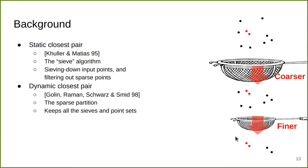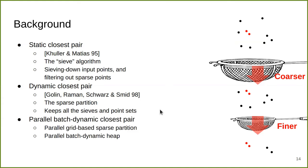For the dynamic closest pair by Gaolin, Rama, Schroetz, and Schmidt, they use a data structure called sparse partition. The fundamental idea is similar to the sieve idea — they keep all the sieves and all the levels. For a dynamic insertion, they throw in a point from the top, and while it trickles down, it also moves points around between these levels. For our parallel batch dynamic closest pair, we base our parallel version on the sequential dynamic closest pair. We also use the sparse partition data structure, specifically the parallel grid-based sparse partition. We also design our own parallel batch dynamic heap to do internal bookkeeping.